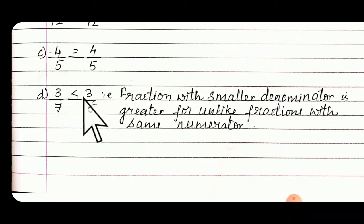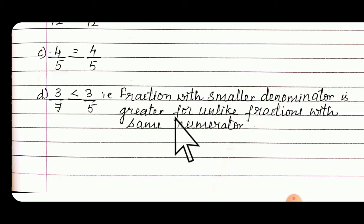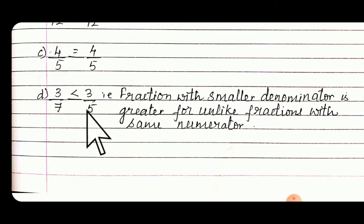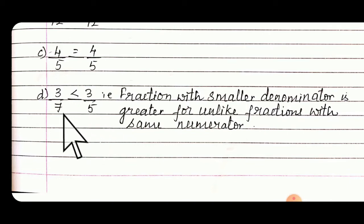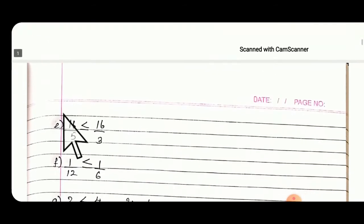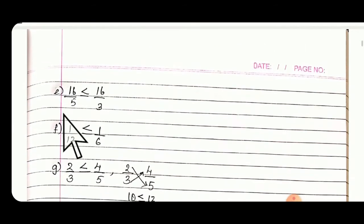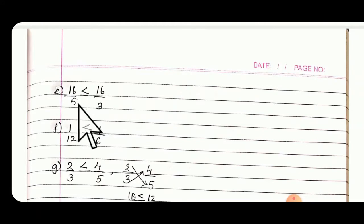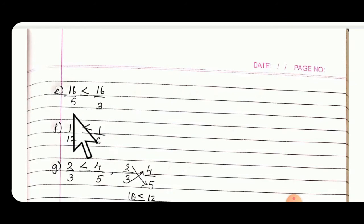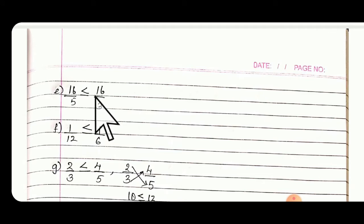Then 3/7 vs 3/5. What is given? For unlike fractions with the same numerator, the fraction with the smaller denominator is greater. See, 5 is smaller but it is greater when comparing. Then 16/5 vs 16/3 — numerators are same, so look at the denominator. 3 has greater parts, so it becomes the greater one.